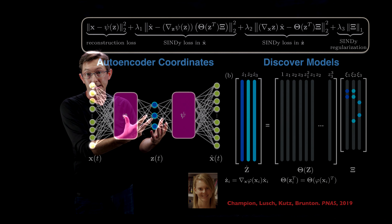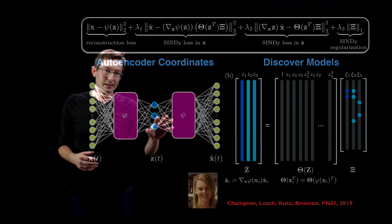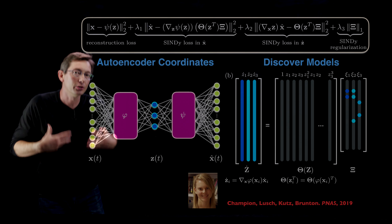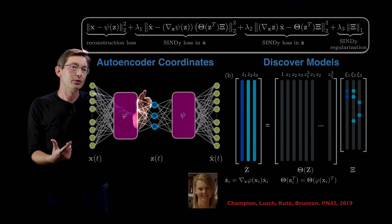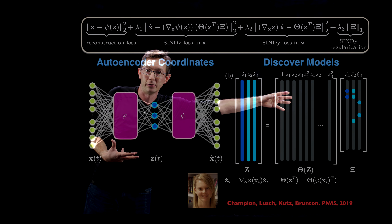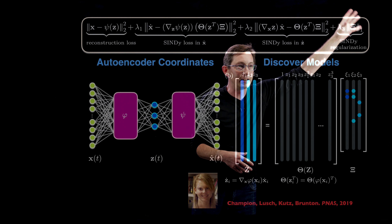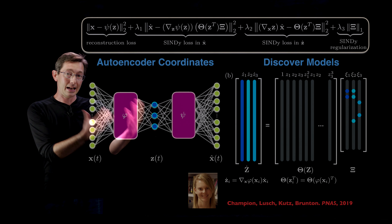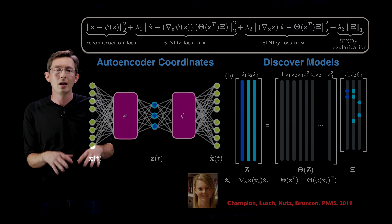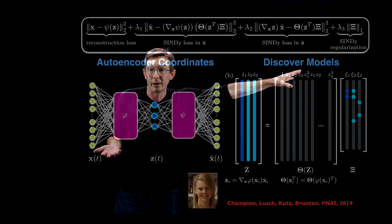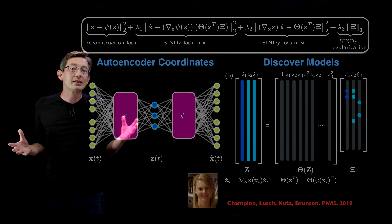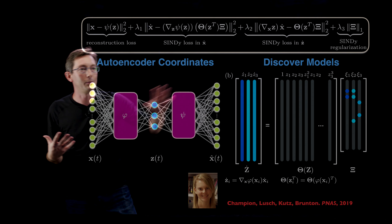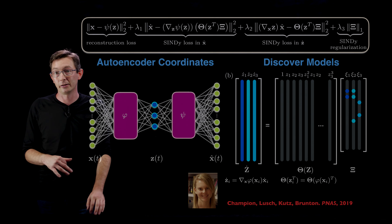The SVD can be thought of in modern neural network language as a shallow linear autoencoder: a neural network with a high-dimensional input and output, and a single low-dimensional latent layer given by the variable z, where the loss function minimizes the error between input and output while choking down to only a few degrees of freedom and then lifting again. You'd never actually compute the SVD this way, but thinking of it as a shallow linear autoencoder means that if SVD coordinates aren't quite cutting it for building SINDy models, you could generalize into a deep nonlinear autoencoder with many layers and nonlinear activation functions.